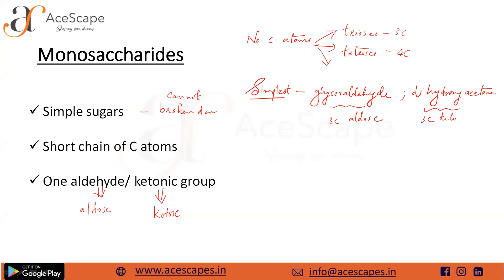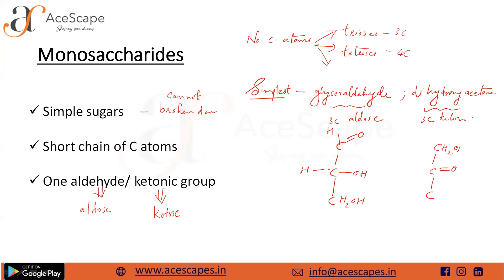Glyceraldehyde is a three-carbon aldose and dihydroxyacetone is a three-carbon ketose — these are the simplest among the monosaccharides. The structure of glyceraldehyde has three carbon atoms, an aldehyde group (CHO), an OH group, and a CH₂OH group. Dihydroxyacetone also has three carbons, with a keto group and CH₂OH groups on both ends.